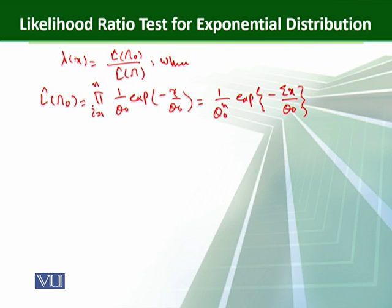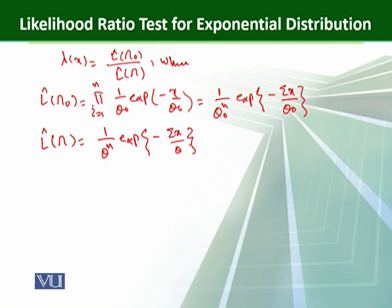On the same line, we can also write down the maximum likelihood function based on the full parameter space. The likelihood ratio lambda(x) is the ratio of these two, which can be written as (theta/theta naught)^n * exp(...).